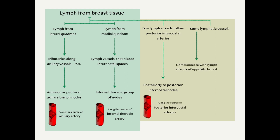Few lymph vessels follow the posterior intercostal arteries. Some lymphatic vessels communicate with the lymph vessels of the opposite breast and the lymph vessels of the anterior abdominal wall.